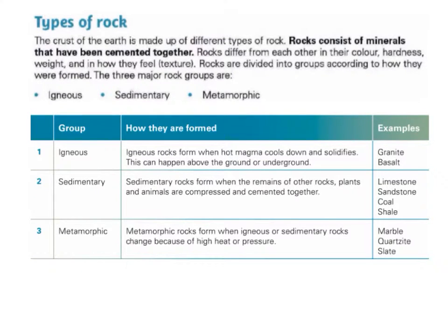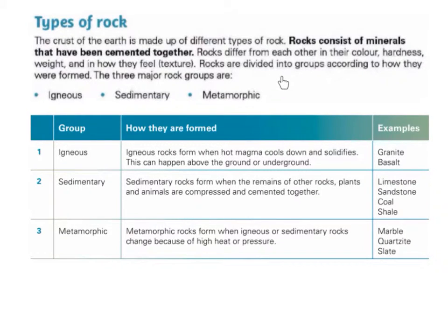Types of Rock. The crust of the earth is made up of different types of rock. Rocks consist of minerals that have been cemented together. Rocks differ from each other in their colour, hardness, weight and in how they feel — their texture. Rocks are divided into groups according to how they were formed.